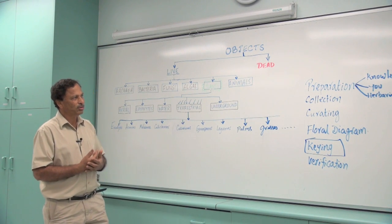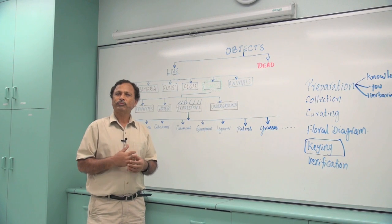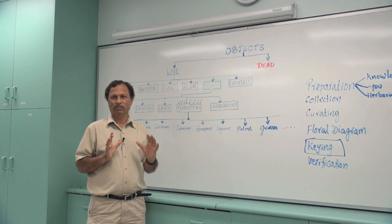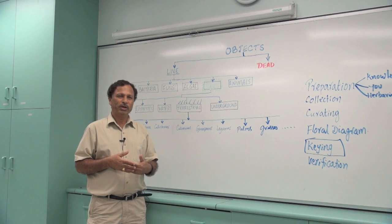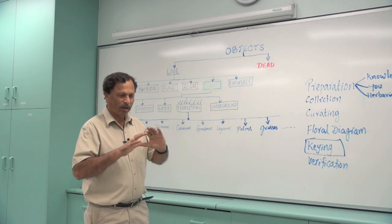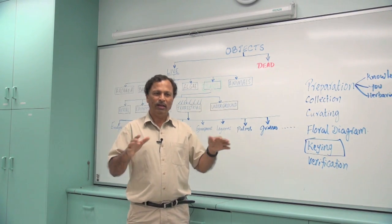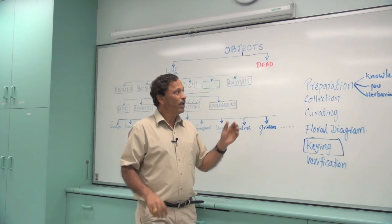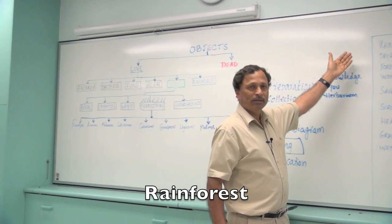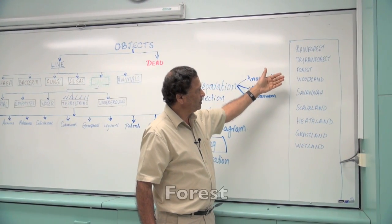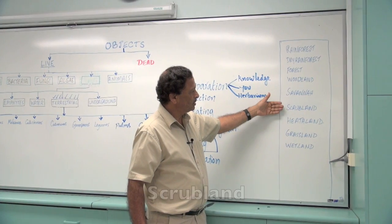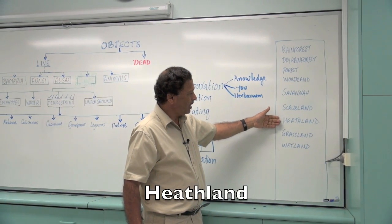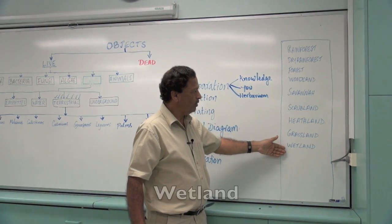You should also have some understanding about the community in which they grow. What does that mean? Community means a range of plants live in certain types of habitat or community, and they are known as rainforests, dry rainforests, forests, woodlands, scrubland, heathland, grassland, and wetland.